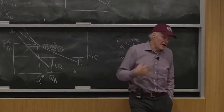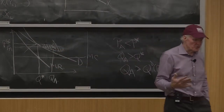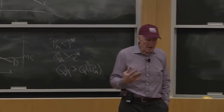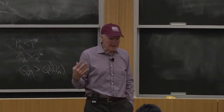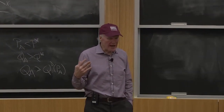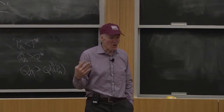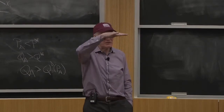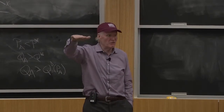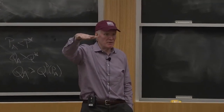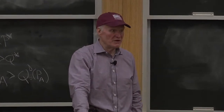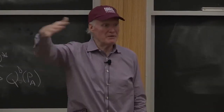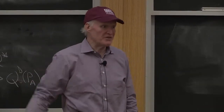An example might be: I'm going to have a grocery store and the way I'm going to get you to buy product A is I'm going to make it harder for you to buy some other products. I'm going to put A on the top shelf and B on the bottom shelf, and that's going to be the way I generate this extra demand.